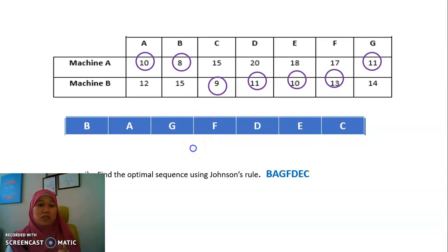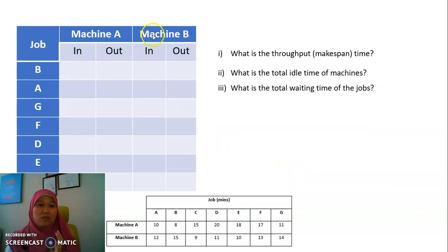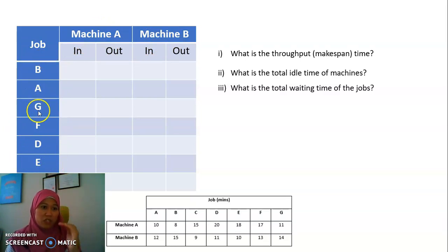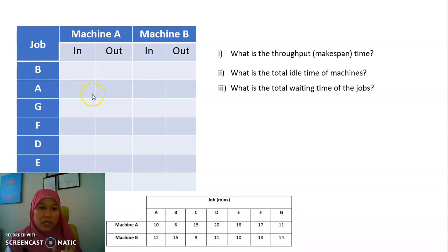Next, answer the question — the optimal sequence is B, A, G, F, D, E, C. Then you have to do the in/out table for Machine A and Machine B. Remember, we need to put the sequence B, A, G, F, D, E, C in this column. How to fill it out: we need to start with Machine A, using all the data for Machine A and following the sequence.